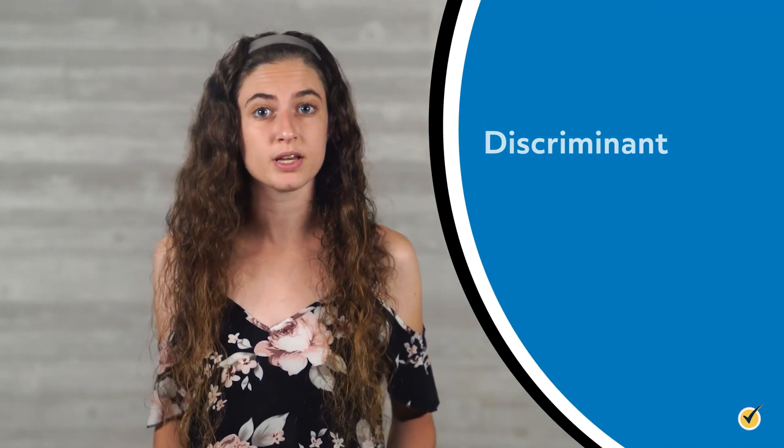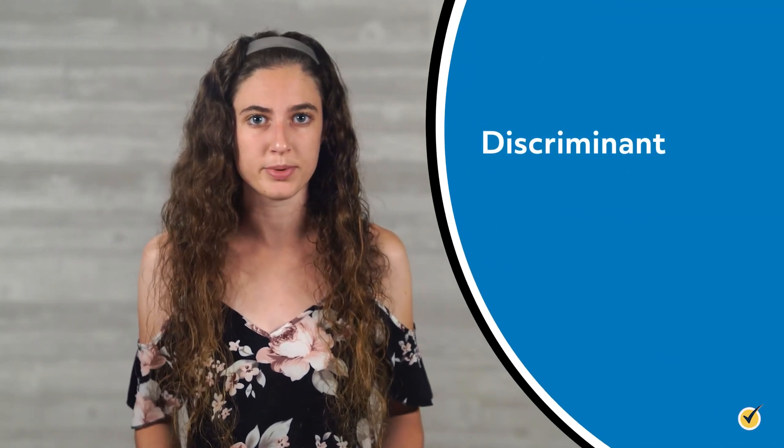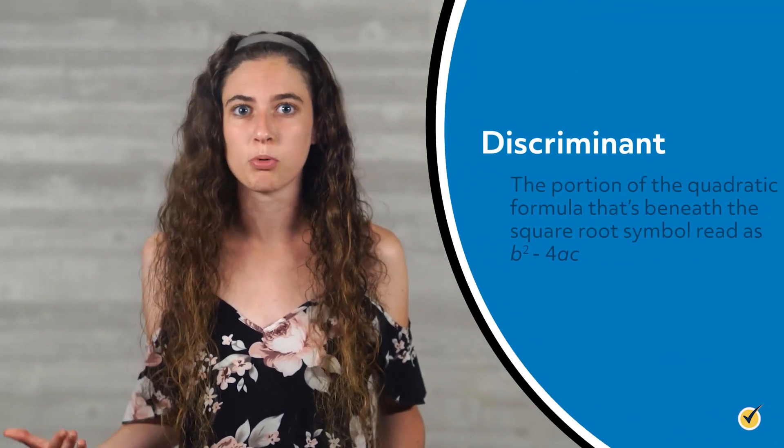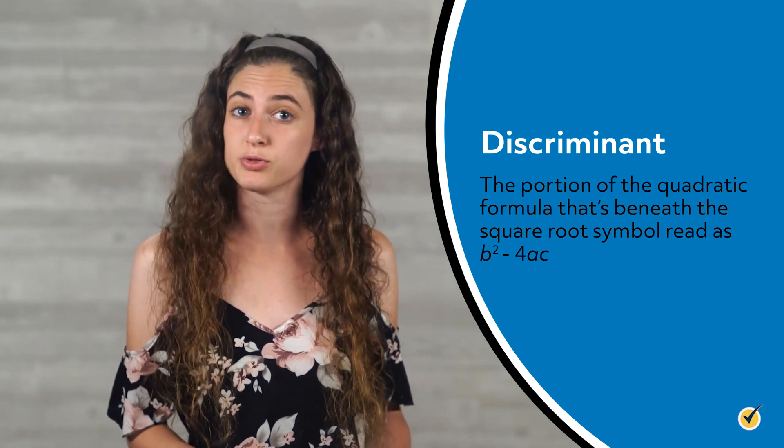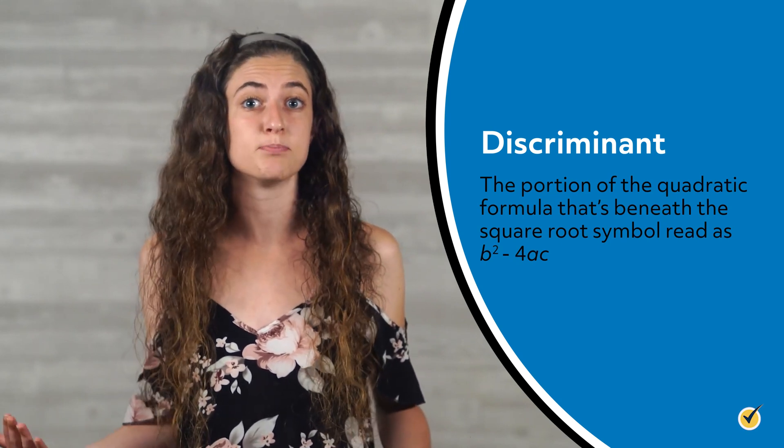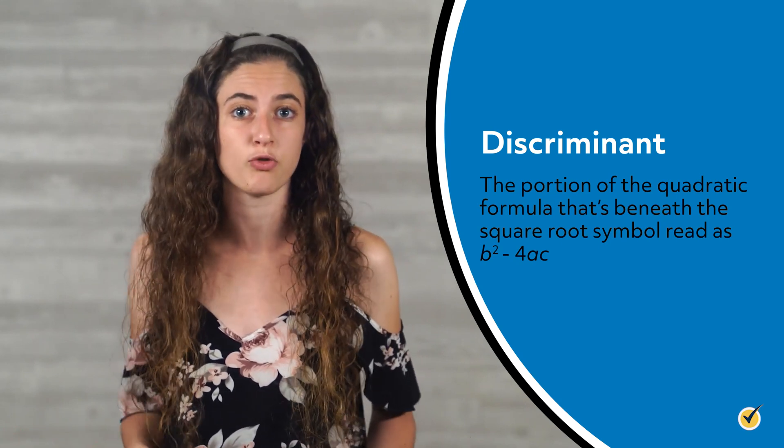In the example we just looked at, there were two possible solutions or roots for x. Quadratic functions can have two solutions, one solution, or no real solutions for x. To figure out how many solutions a quadratic equation has, look at the discriminant in the quadratic formula. The discriminant is the portion of the quadratic formula beneath the square root symbol — the part that reads b squared minus 4ac.